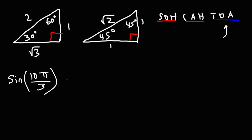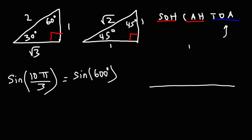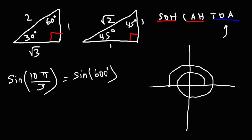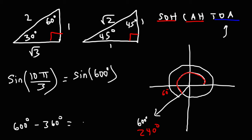Sine of 10π over 3 equals sine of 600 degrees. Going around: 90, 180, 270, 360, 450, 540 — 60 more gets us to 600. Note that 600 minus 360 equals 240, so 600 and 240 are coterminal angles that land at the same location. For any angle greater than 360, subtract 360 to find the coterminal angle.